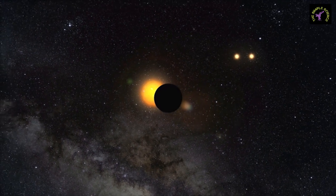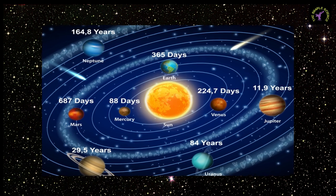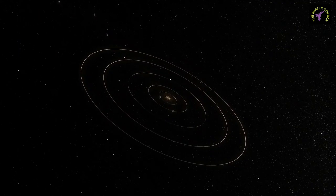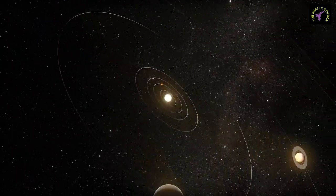Newton went on to show that, according to his law, gravity causes the moon to move in an elliptical orbit around Earth and causes Earth and other planets to follow elliptical paths around the sun.